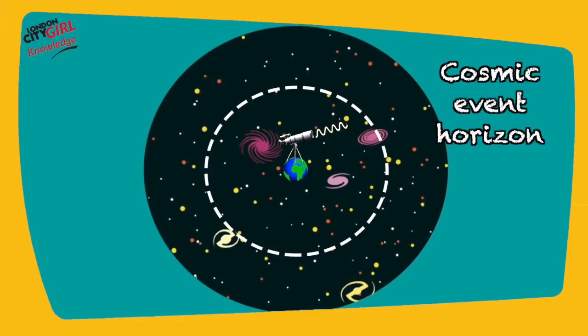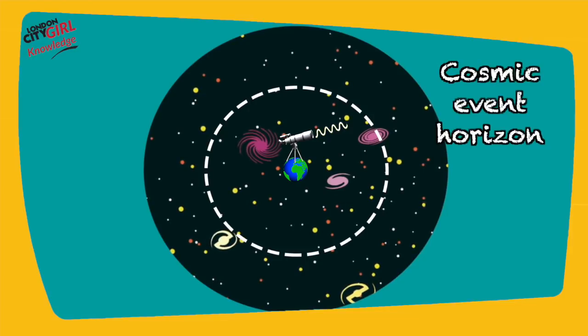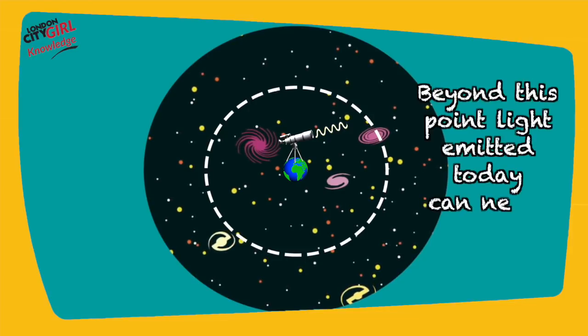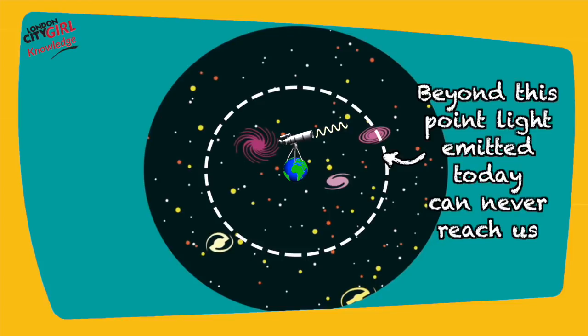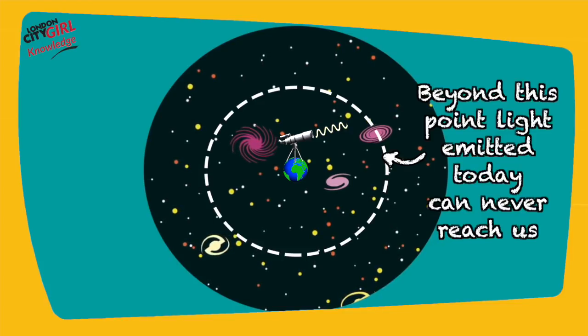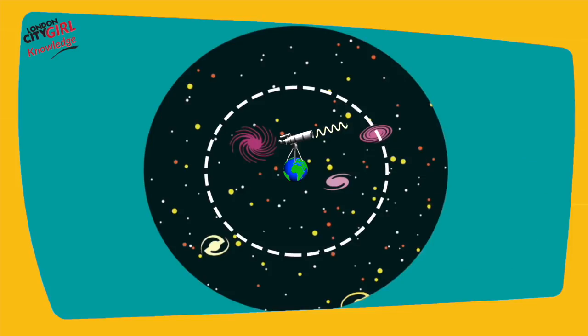The cosmic event horizon is the region of the universe from beyond which light emitted today can never reach us, because the space in between is stretching faster than the speed of light. The cosmic event horizon is around 16 billion light-years away from us.